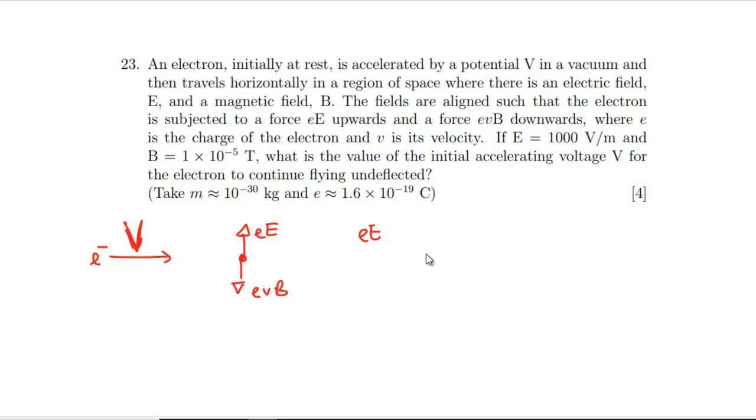Okay, so we've got E and B are the same, so eE equals evB. Cancel those, so the velocity is going to equal E/B which is 10⁸ m/s. And that's got to be - well, ½mv² because that's what we're getting the energy from, has got to equal eV.